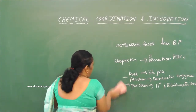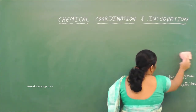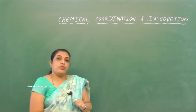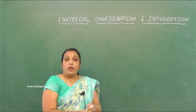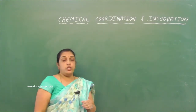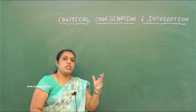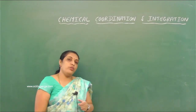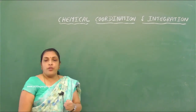Classification of hormones based on their chemical nature: hormones are classified into protein hormones, steroid hormones, and iodine-containing hormones. Protein hormones include insulin, glucagon, and growth hormone. Estrogen and progesterone come under steroid hormones. Iodine-containing hormones include T3 and T4.